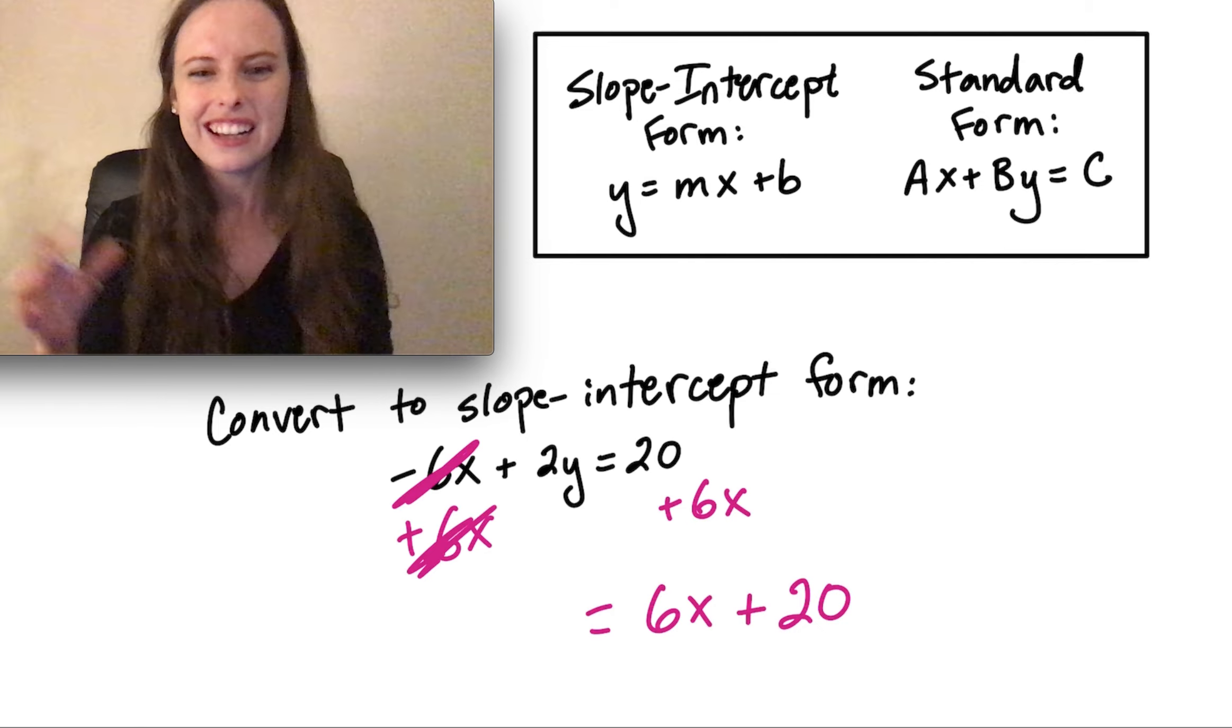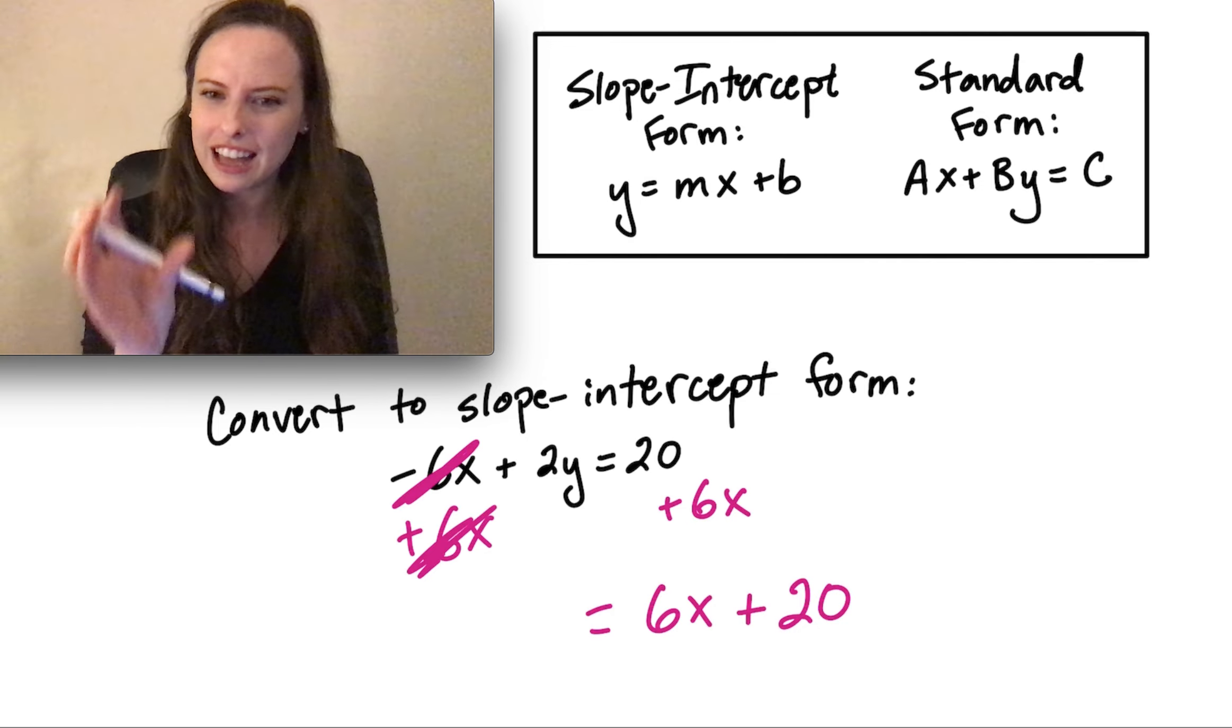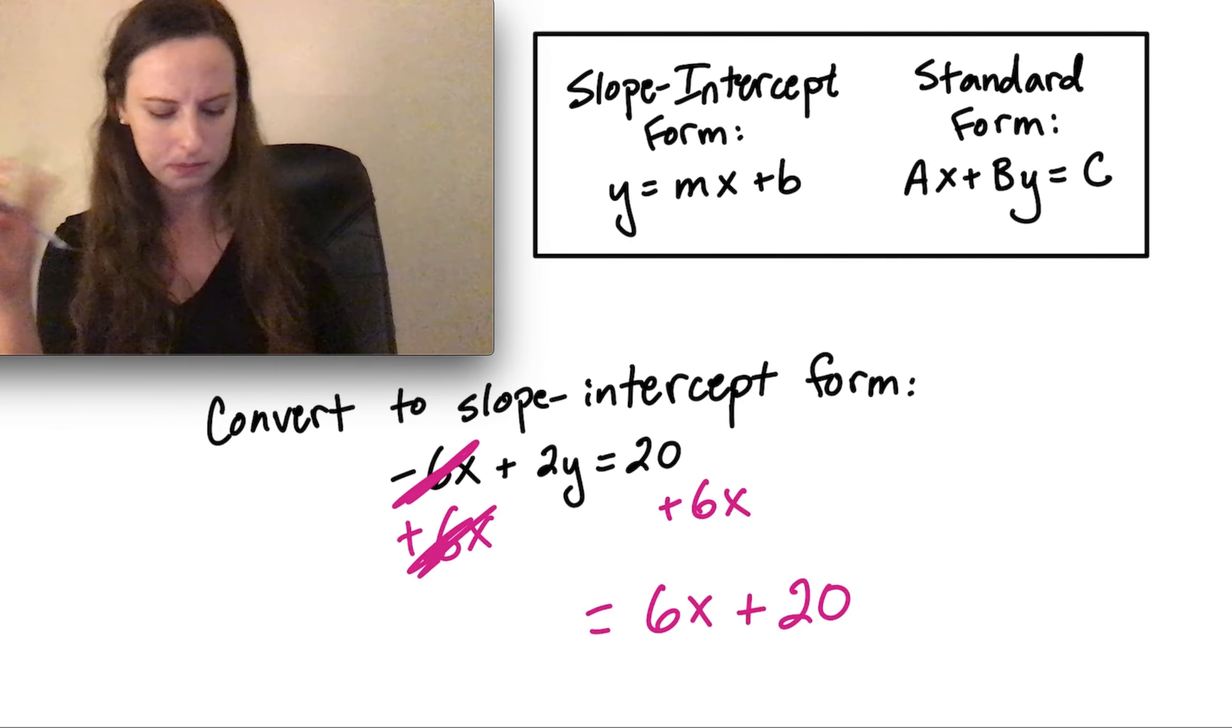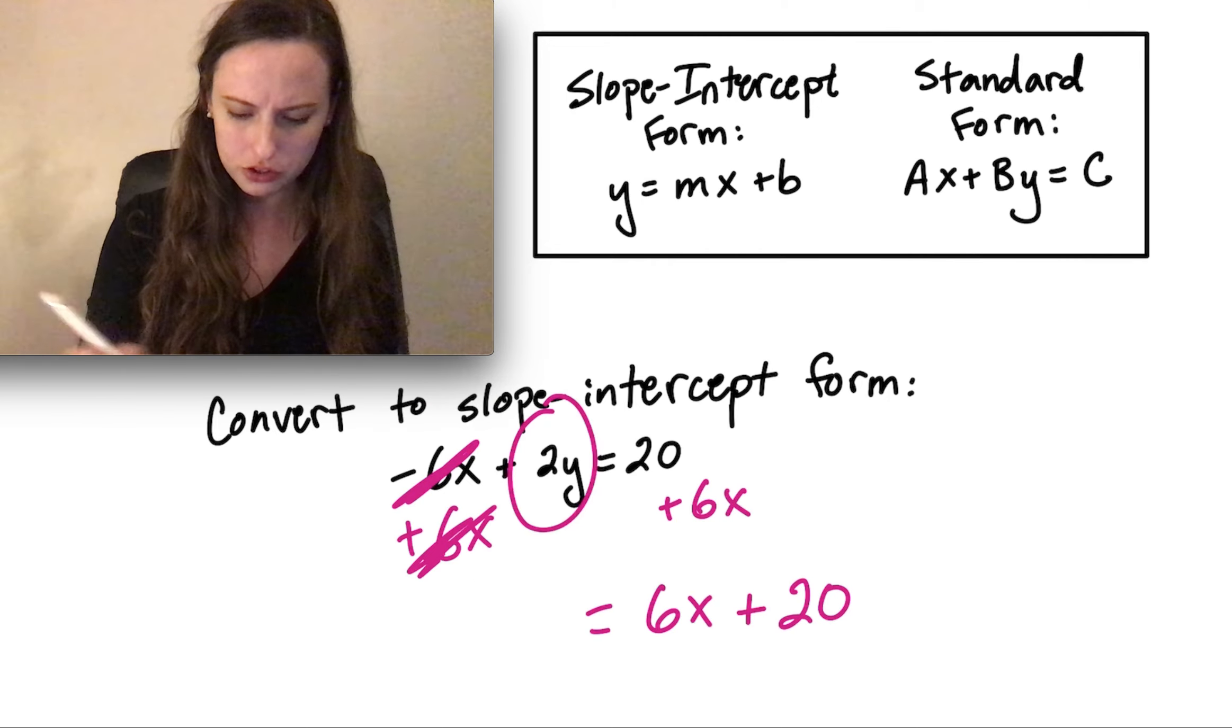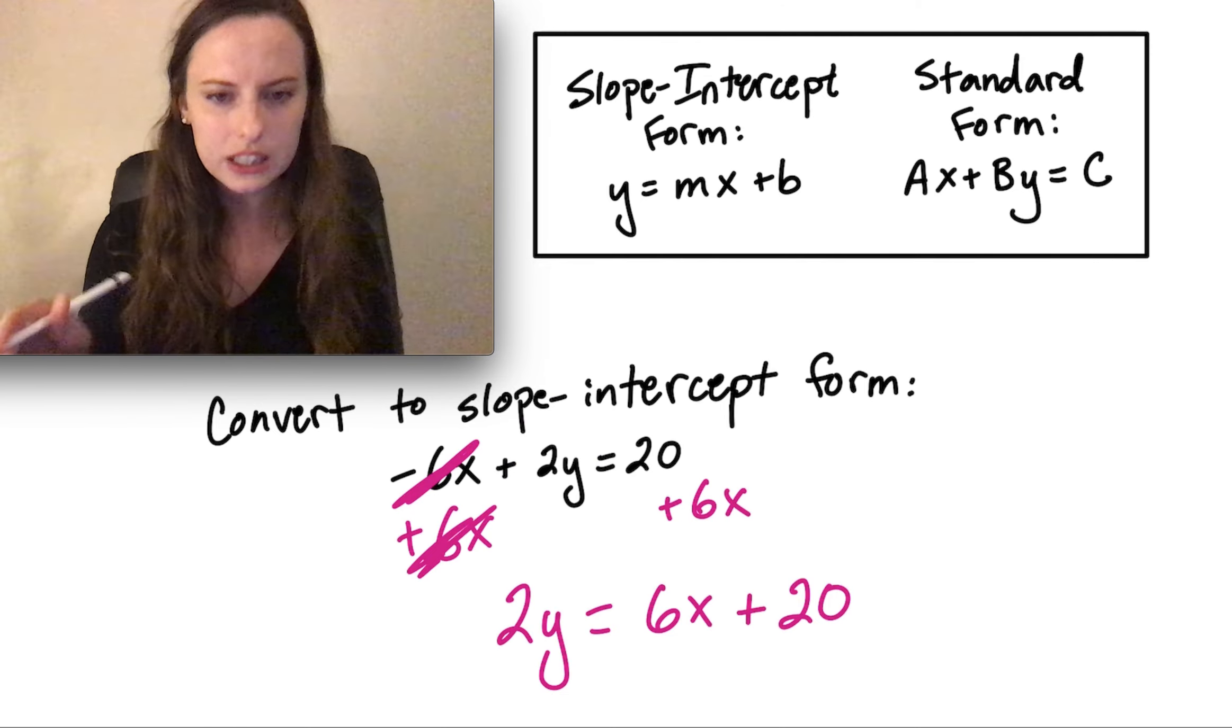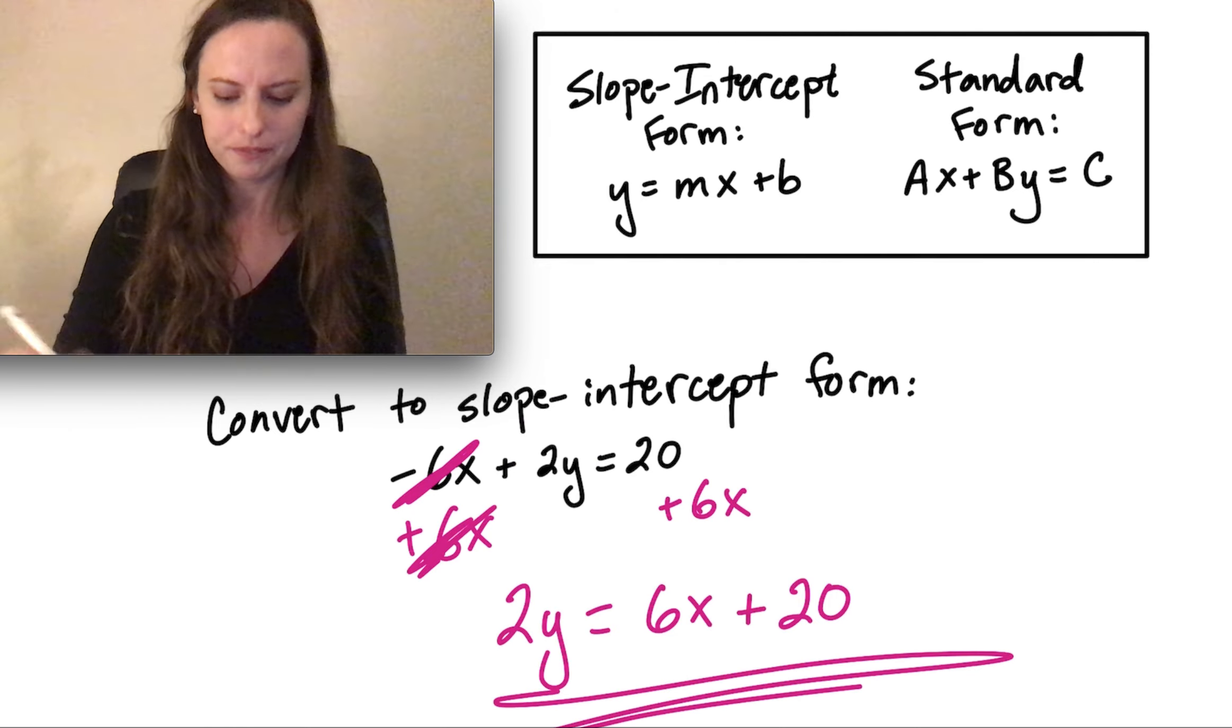It doesn't really matter, it's just my preference of always having the x term first and then the number term second. These cancel out here on the left. So we're left with 2y on the left-hand side. We have 2y equals 6x plus 20.